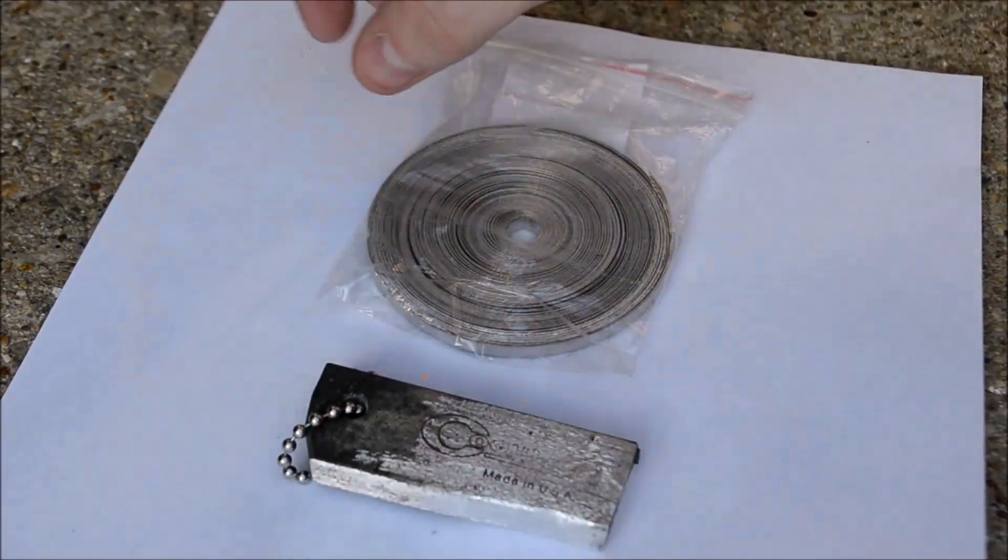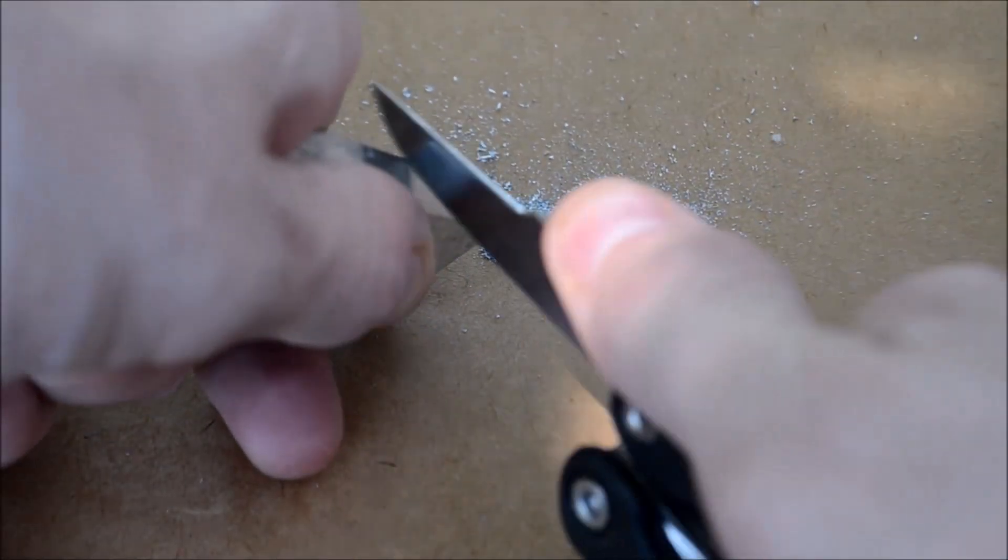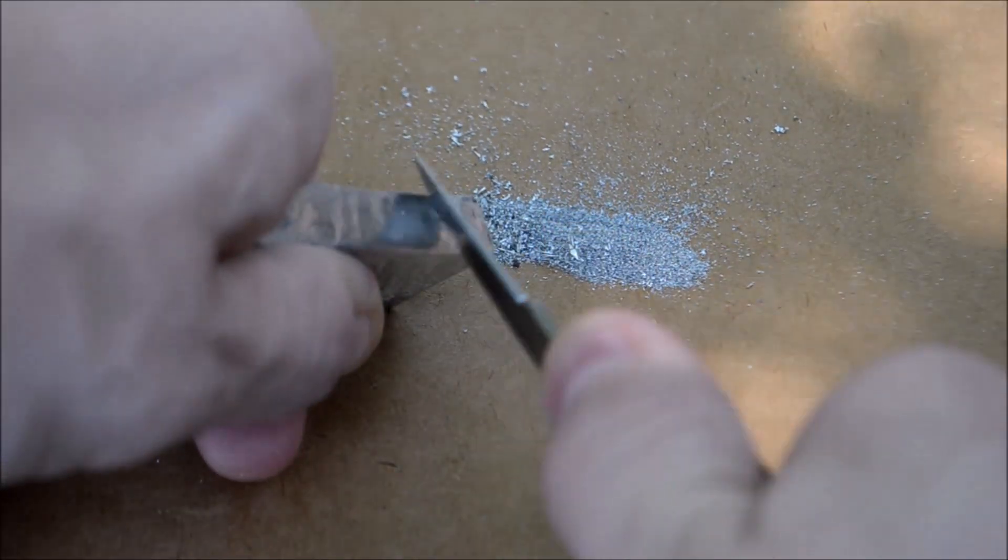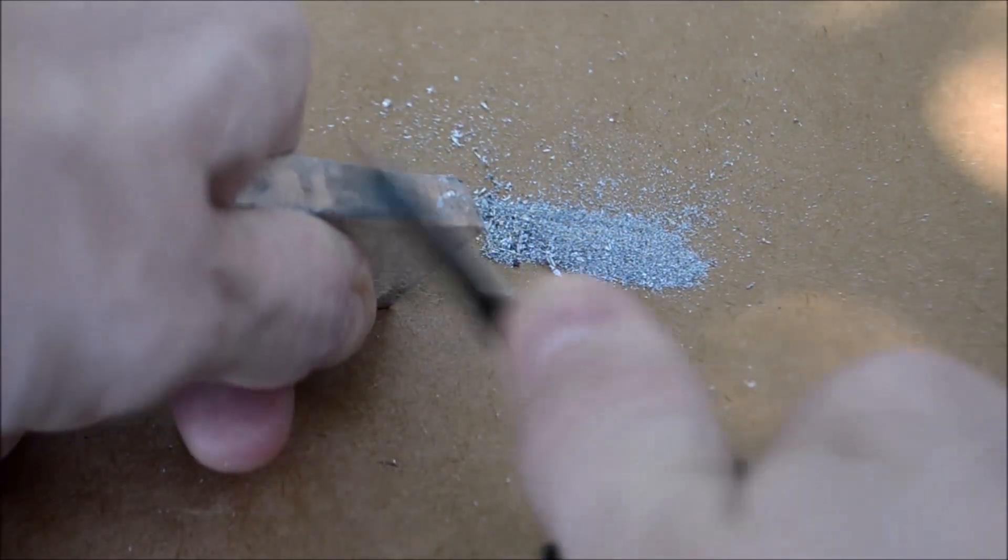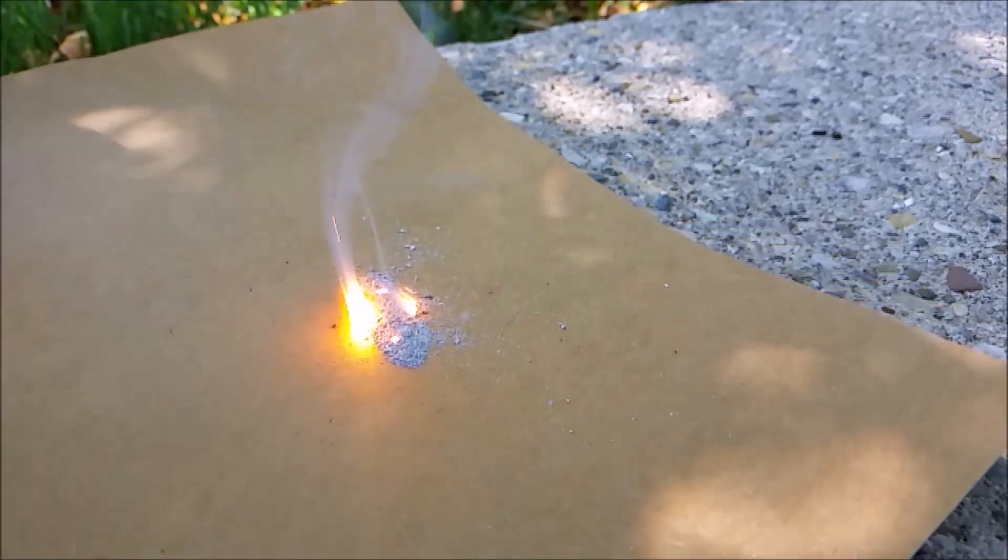I've got a magnesium fire starter and some magnesium ribbon that I want to show you. To use the fire starter, you need to scrape off small pieces of the magnesium. When you have a pile of powdered magnesium, all it takes is a spark to get it going.